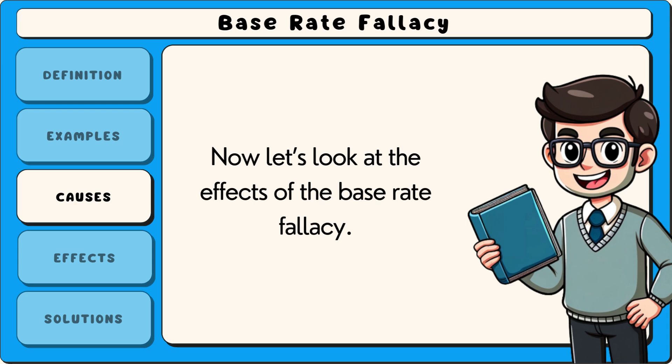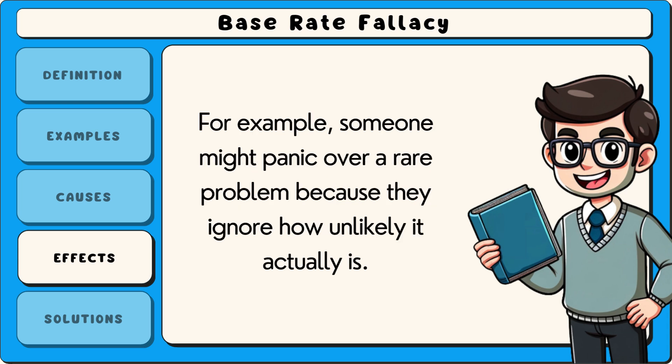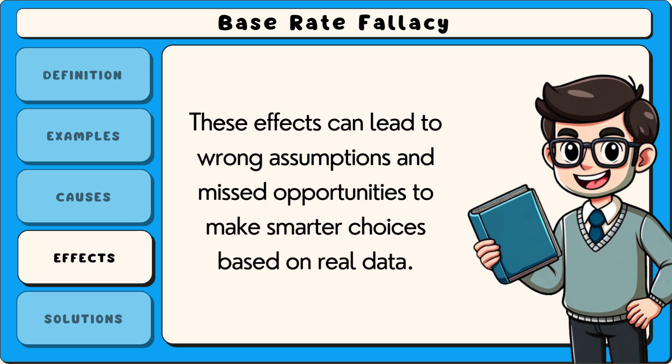Now let's look at the effects of the base rate fallacy. One effect is that it can lead to poor decision making, especially when dealing with risk or uncertainty. For example, someone might panic over a rare problem because they ignore how unlikely it actually is. Another effect is that people may place too much trust in stereotypes, thinking that a person must belong to a certain group just because of a few traits, even when the numbers don't support it. These effects can lead to wrong assumptions and missed opportunities to make smarter choices based on real data.